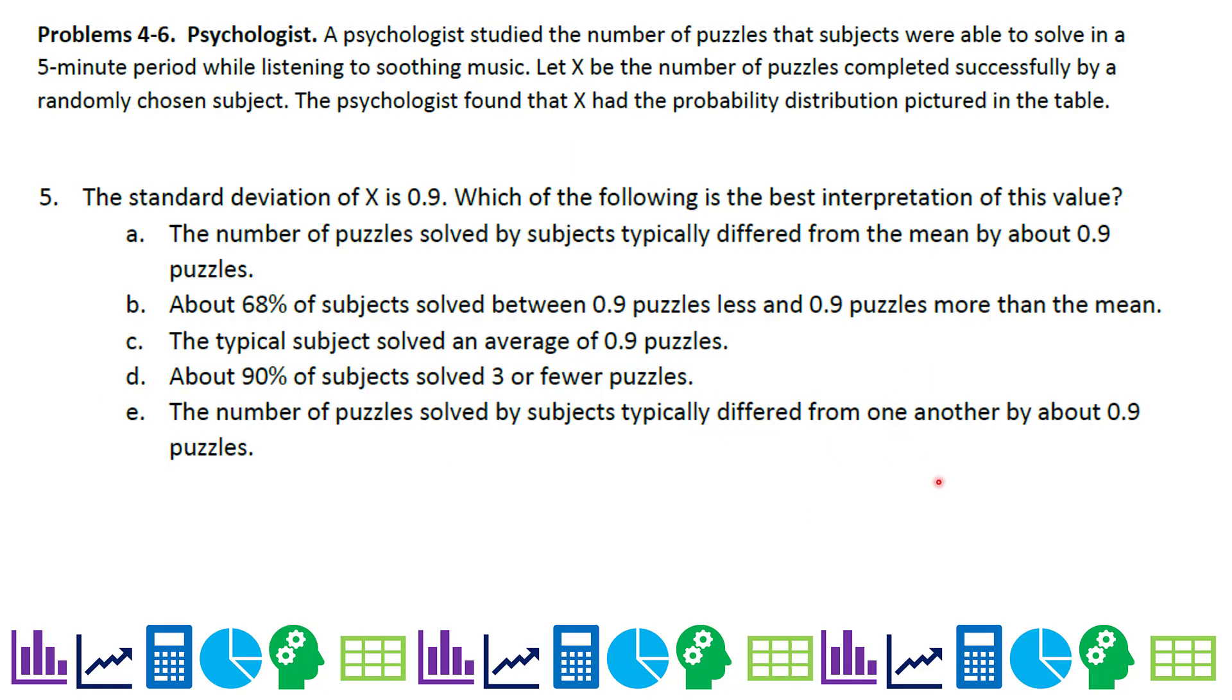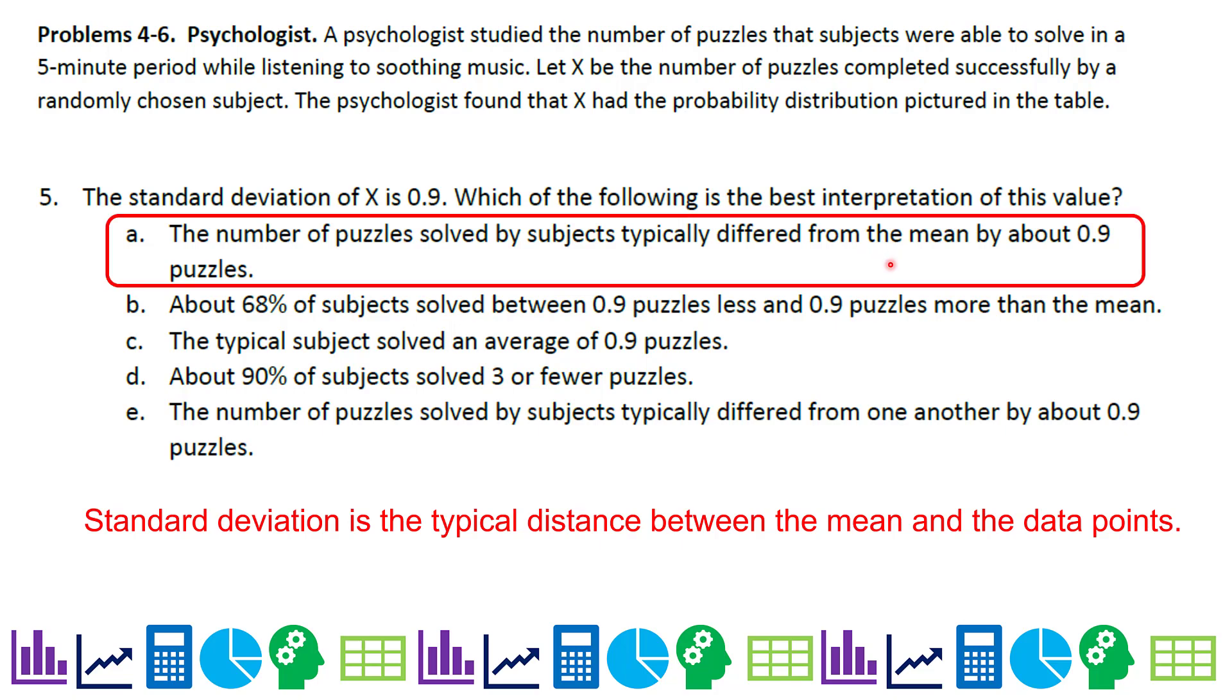Number five, the standard deviation of X is 0.9. Which of the following is the best interpretation of this value? You really need to remember that standard deviation is the typical distance between the mean and the data points. The one that shows that is this first choice, A. The number of puzzles solved by subjects typically differed from the mean by about 0.9 puzzles. I accidentally had subjects typically differed from one another. You want to make sure that word mean is in the description there.